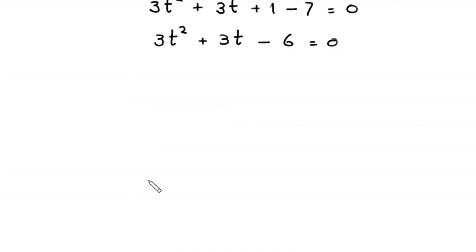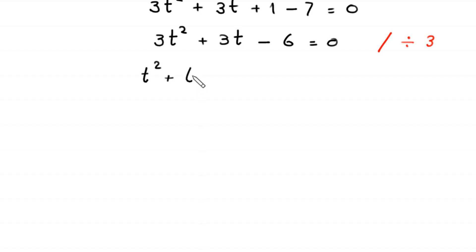The whole equation is divisible by 3, so we divide by 3. This becomes t² + t − 2 = 0. This is a quadratic equation and fortunately it is factorable, so we solve it by factorization.